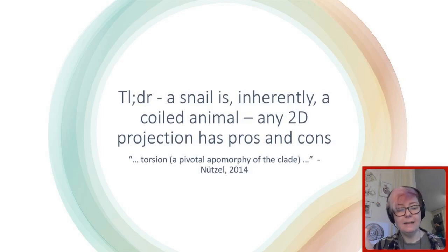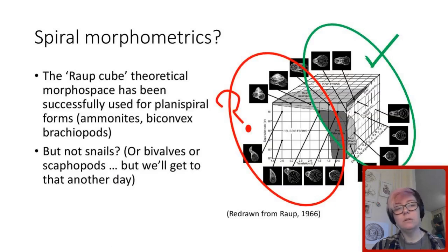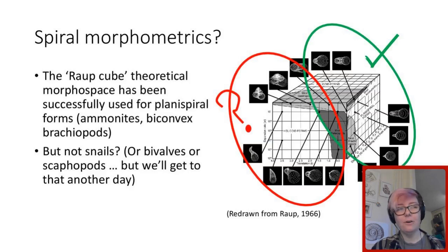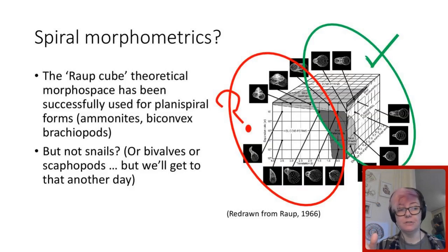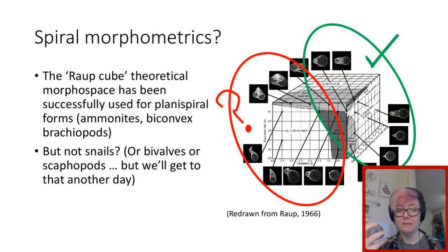As beautifully summarized by Alex Nützel, torsion is a pivotal apomorphy of the clade, and any 2D projection of a snail has pros but also cons. So I thought: let's think about ways we could use the spiral — can we come up with a spiral morphometrics? Fortunately, many older and wiser heads have already been down this track. There's a long and beautiful history of theoretical shell morphology looking at growth and coiling in molluscs. The RAUP 1966 paper — the RAUP cube — has been used successfully for ammonites and biconvex brachiopods, but not particularly for snails, bivalves, or scaphopods — the helicospirals.